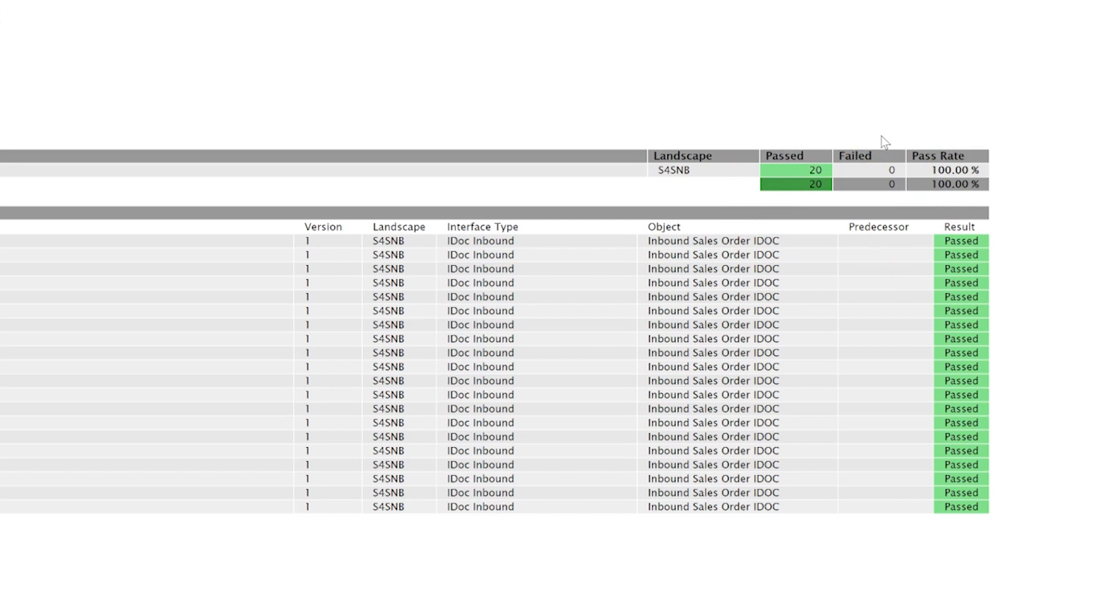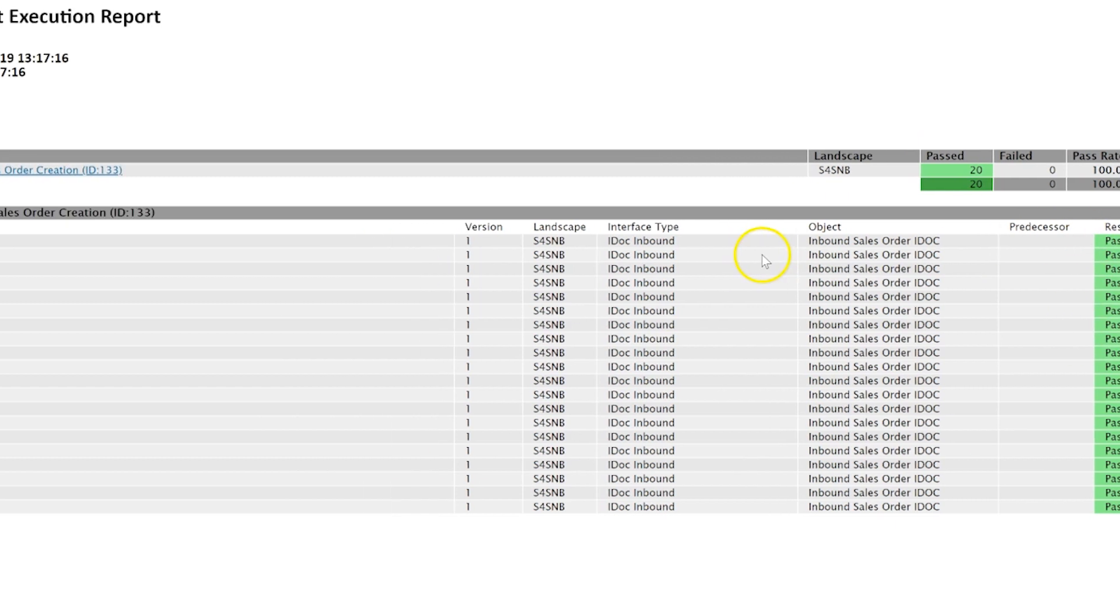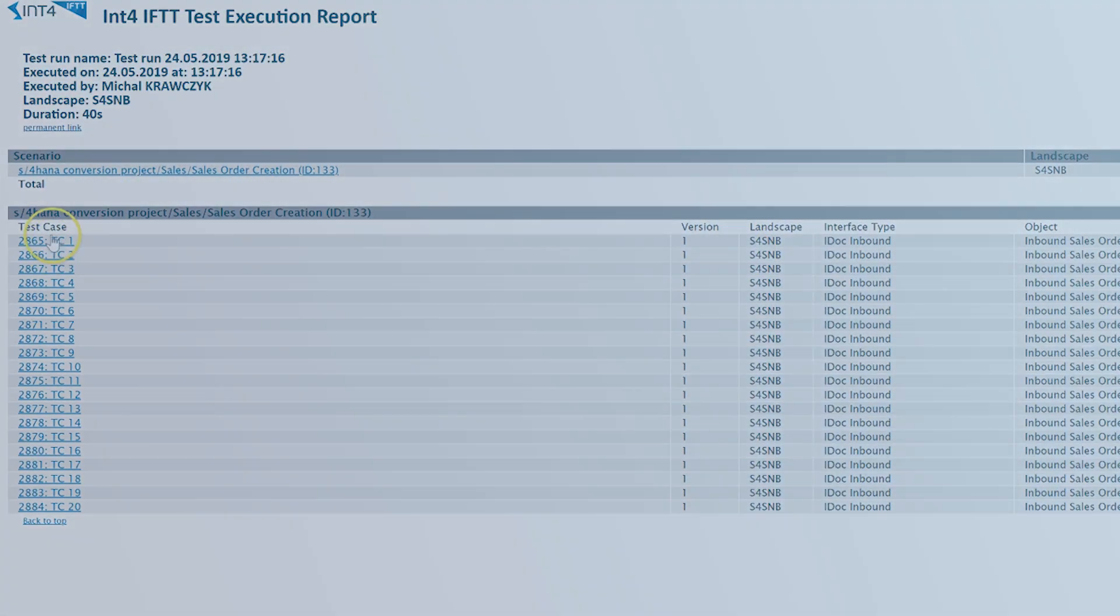As a result, we will get a report showing the differences between the posted sales orders. As you can see, the run took only a few seconds and in that time, INT4IFTT posted 20 new sales orders and compared them with the reference sales orders. It seems that all of the new sales orders are exactly the same as the reference sales orders.